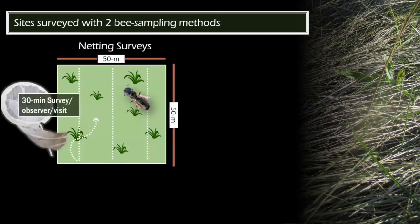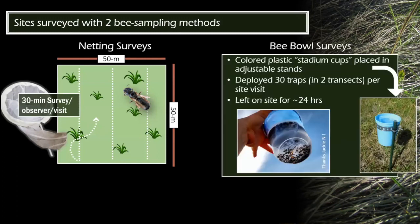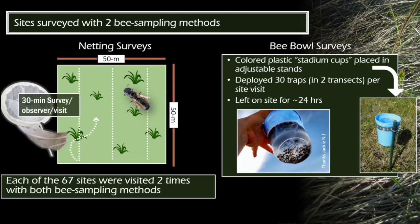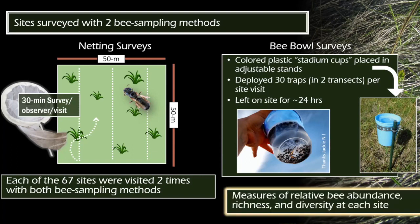The first method was netting surveys, which involves observers netting for bees within a plot. The second method was bee bowl surveys — colored cups full of soapy water placed on a transect on the grassland for 24 hours. Bees are attracted to the color and fall in. Each of the 67 sites was visited two times with both bee sampling methods, giving us measures of relative bee abundance, species richness, and diversity at each site.